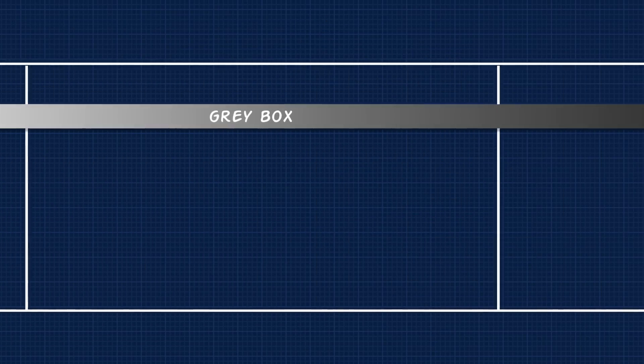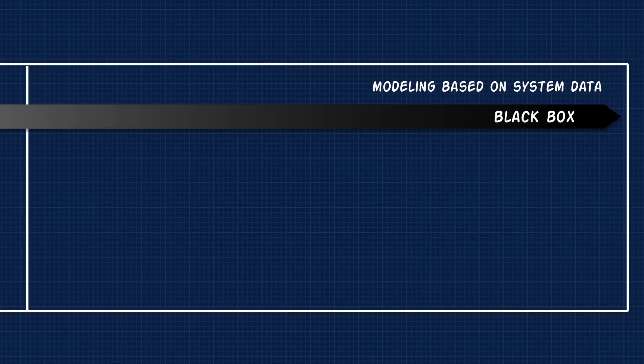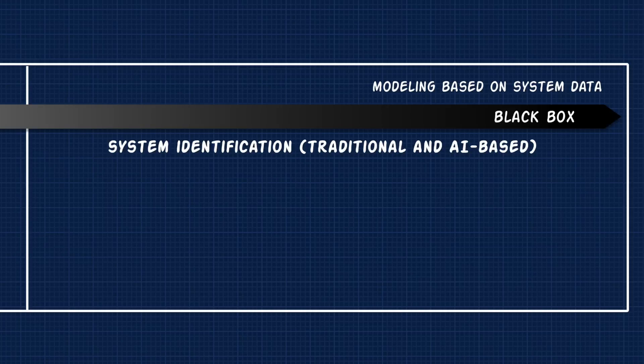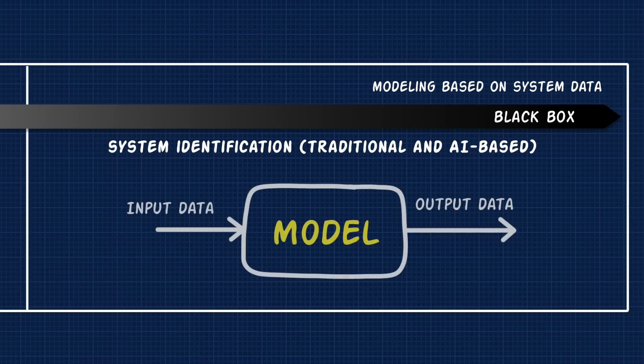On the opposite end of this is the black box method, where you don't necessarily know the physics of your system, but what you do have is data from the system. In this case, you can use that data to fit a model using a process called system identification. There are many different methods for system identification, but regardless of the method used, the bottom line is that you're using data to understand the relationship between the inputs into the system and the outputs that it generates. So even if you aren't left with a model that reflects the physics of the system, you still have something that captures the behavior of the system.